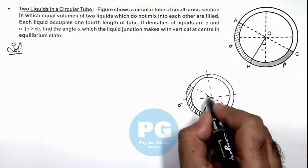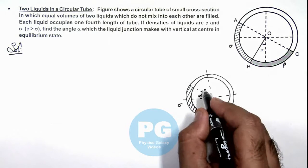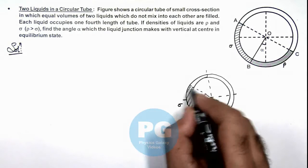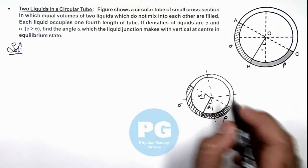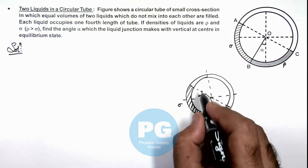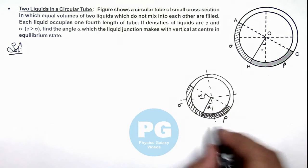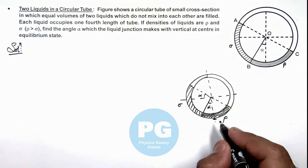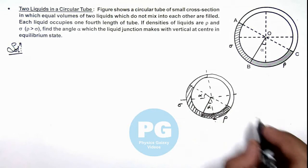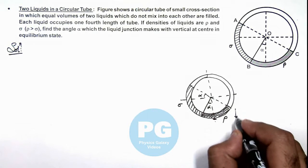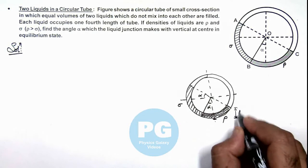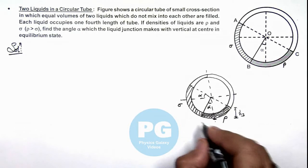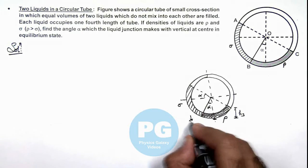So if this angle is α, this will also be α. And we can consider this level is at some height above the level. Here you can see, if with respect to bottom if we analyze, we can see this height, say it is h₃, and this height we consider as h₂, the level of junction above the base of this tube.